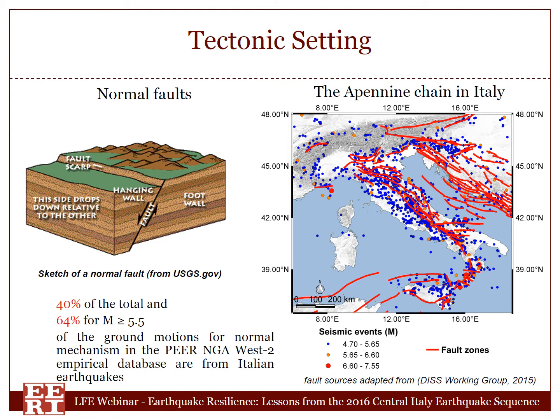This is the tectonic setting of Italy, mainly composed of normal faults. On the right-hand side of this slide, you can see that all red segments are actually seismogenic sources. Normal fault events from Italy are particularly important because a large majority of earthquake ground motions in global databases, like the PEER and NGA West 2 database about normal faulting, are from Italian earthquakes. So understanding what's going on in that region has a strong impact on global earthquake engineering analysis.